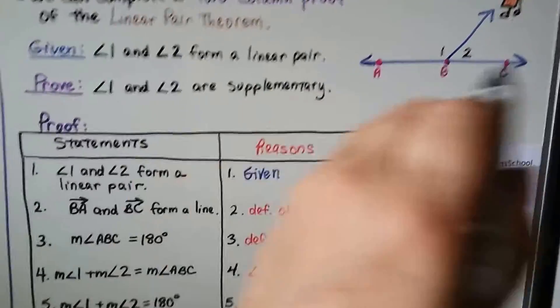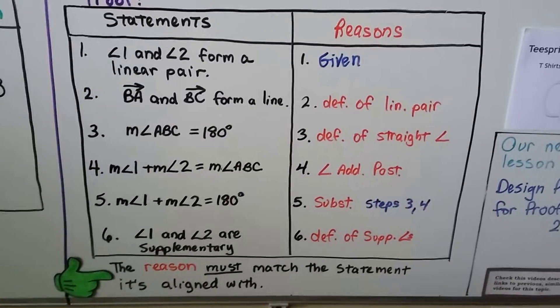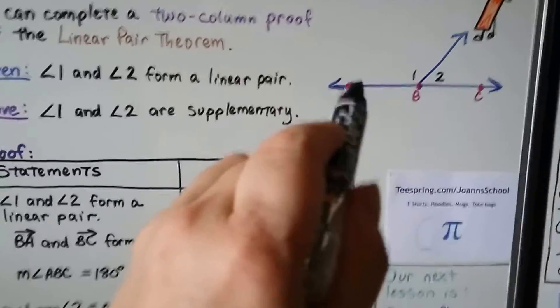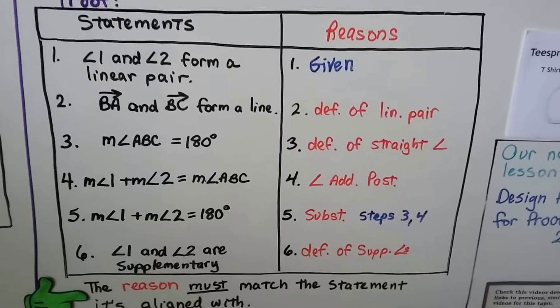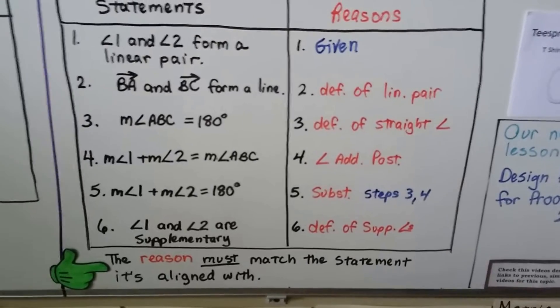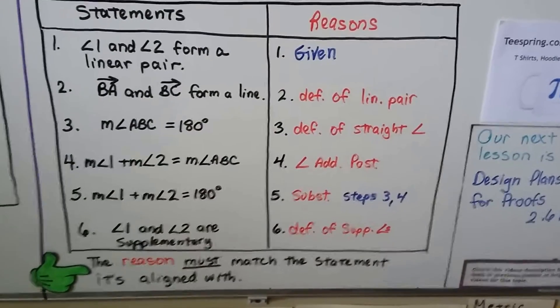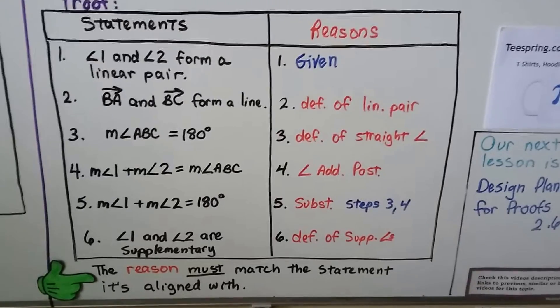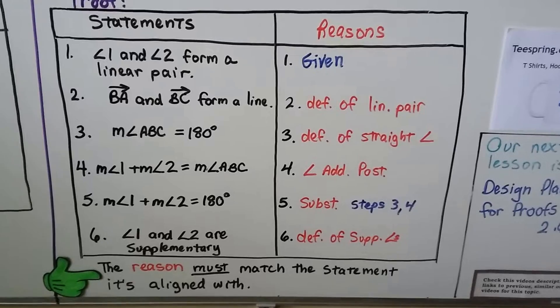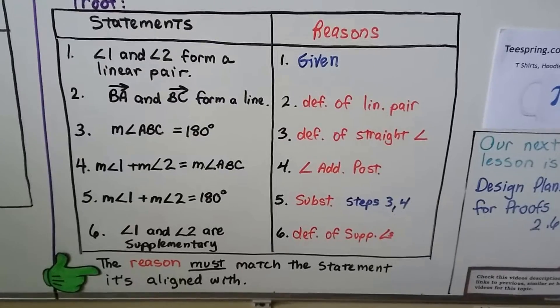Our second statement is ray BA and BC form a line. That's the definition of a linear pair — that's our reason. Our third statement is the measure of angle ABC equals 180 degrees. If B is the vertex and this is angle ABC, it does measure 180 degrees — that's the definition of a straight angle. Statement four says the measure of angle 1 plus the measure of angle 2 equals the measure of angle ABC, and our justification is the Angle Addition Postulate. Our fifth statement is the measure of angle 1 plus the measure of angle 2 equals 180 degrees — justified by substitution from steps three and four.